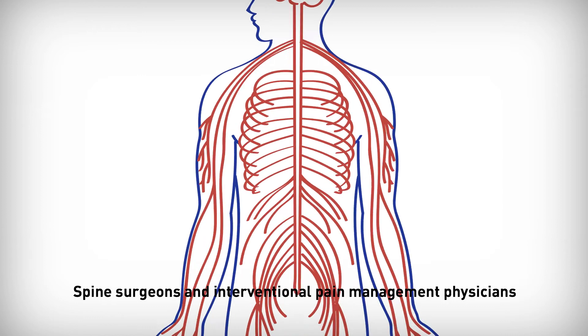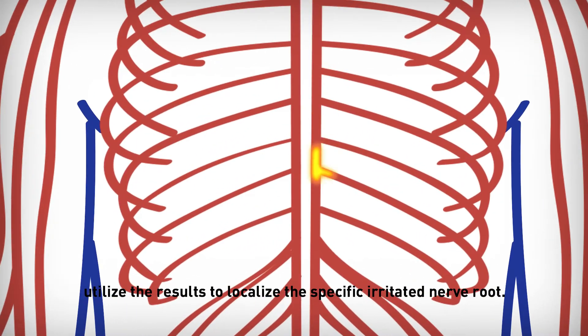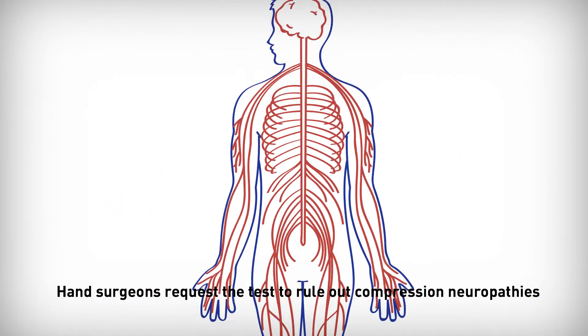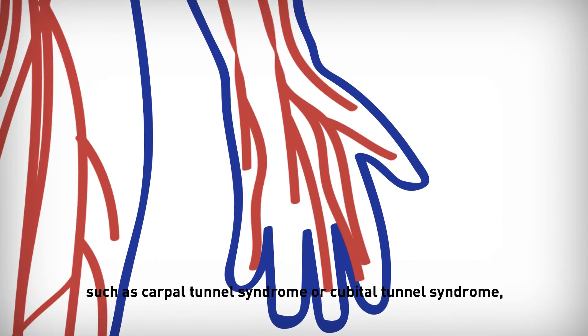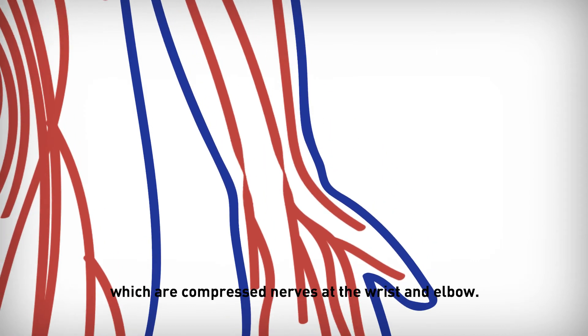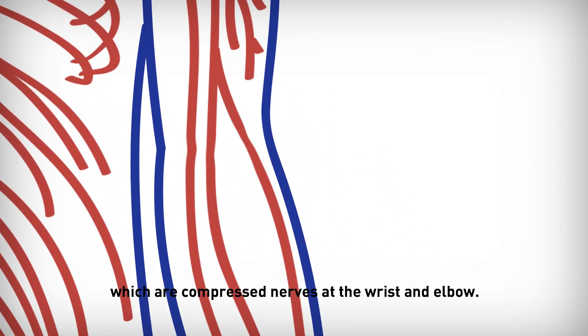Spine surgeons and interventional pain management physicians utilize the results to localize the specific irritated nerve root. Hand surgeons request the test to diagnose compression neuropathies such as carpal tunnel syndrome or cubital tunnel syndrome, which are compressed nerves at the wrist and elbow.